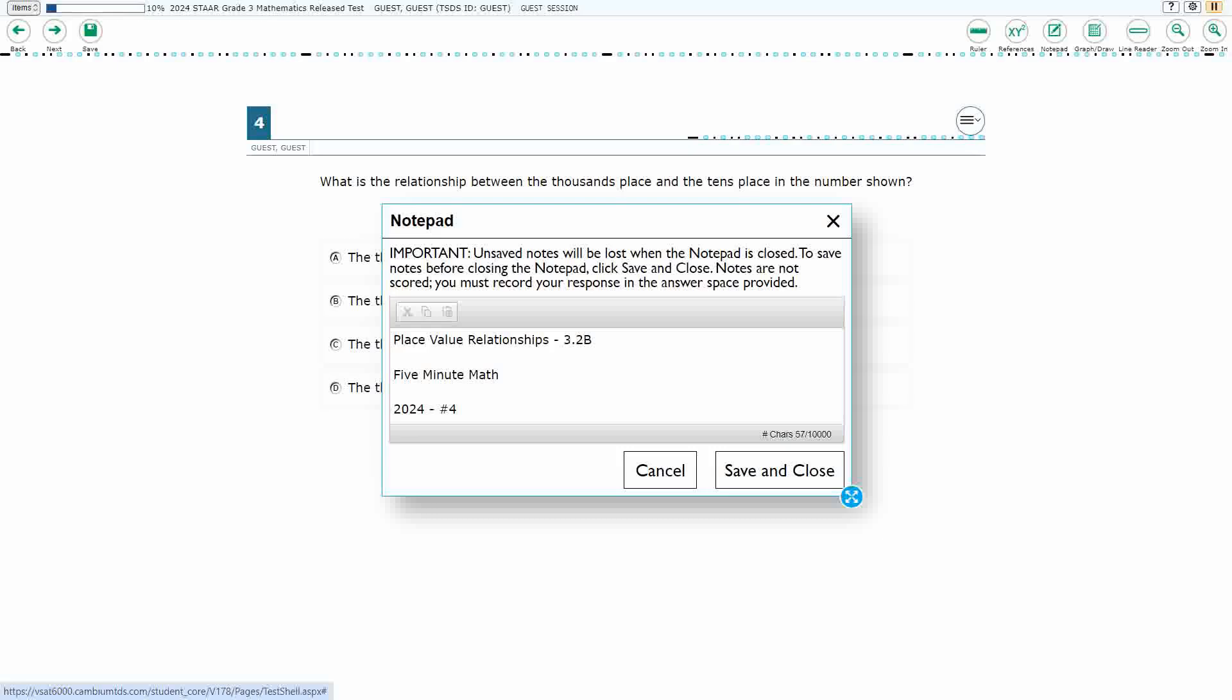Hello, and welcome to 5-Minute Math. Today we are looking at the 3rd grade concept of place value relationships. This is standard 3.2b in the great state of Texas, and we are using item number 4 of the 2024 released STAR test.